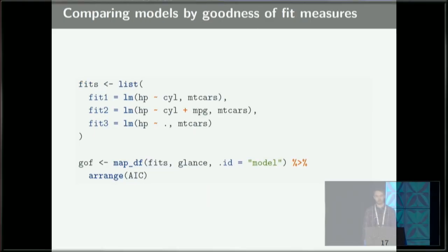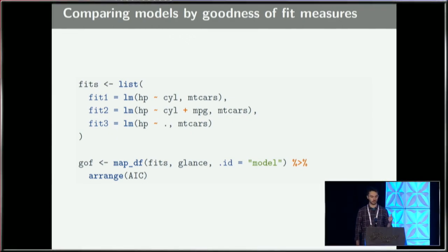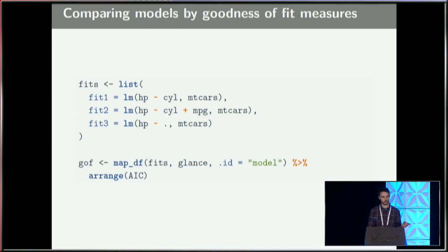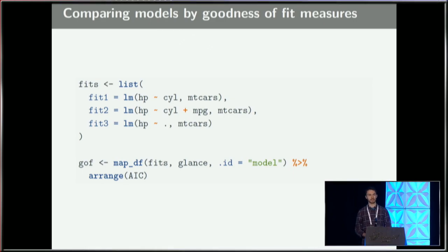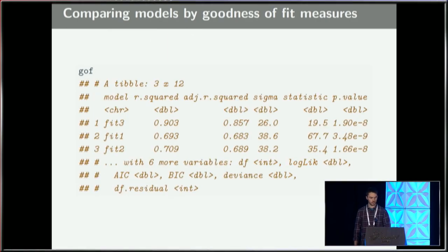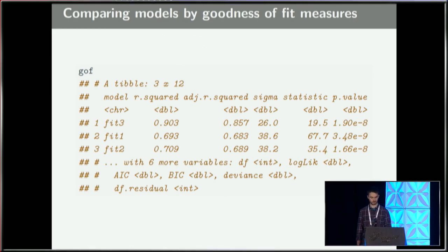You can also use Broom to compare different models by applying the glance generic to a list of models at once. I put three different models in a list — fit1, fit2, fit3 — adding more predictors at each step. Then using map_df from the purrr package, I apply glance to each model and put the results into a single data frame arranged by AIC. The result is a summary for each model, and in this case fit3 is the best model in terms of AIC. You can also plot this immediately for a nice visual model comparison.